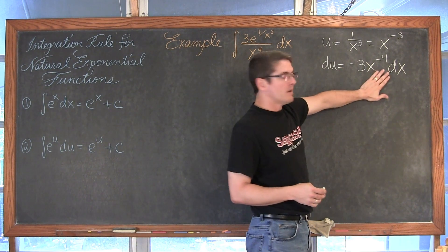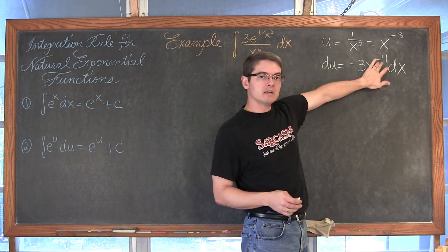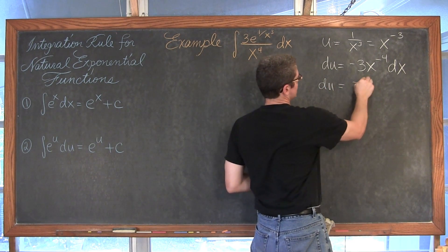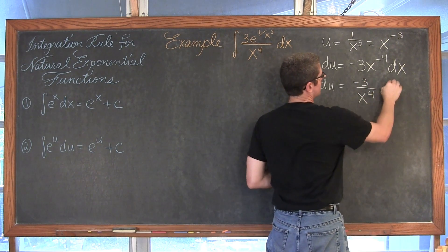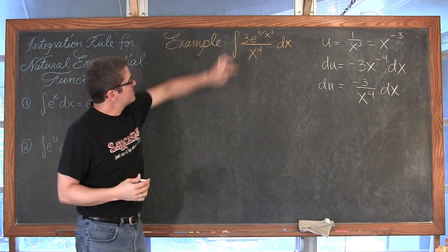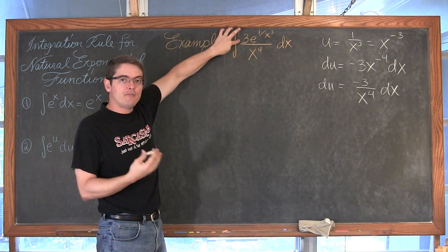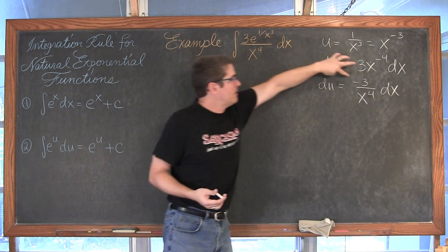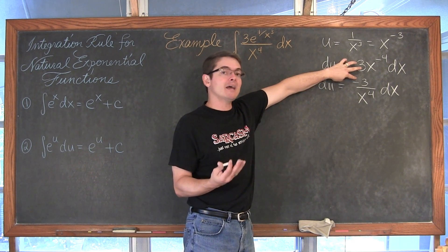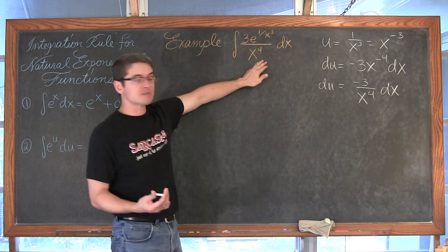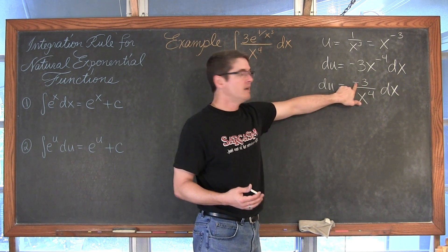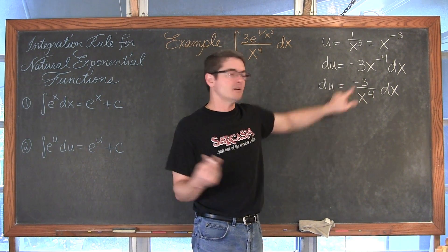We can rewrite this: du is negative 3 over x to the fourth dx. My numerator has a coefficient of positive 3 and the expression I want to substitute has negative 3 in the numerator and x to the fourth in the denominator. All I have to do for a nice substitution is move the negative to the left side of the equation.